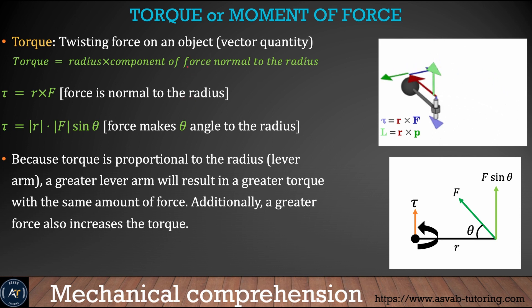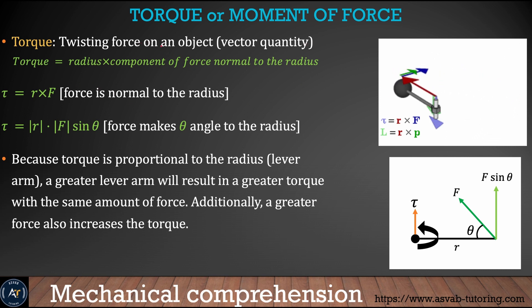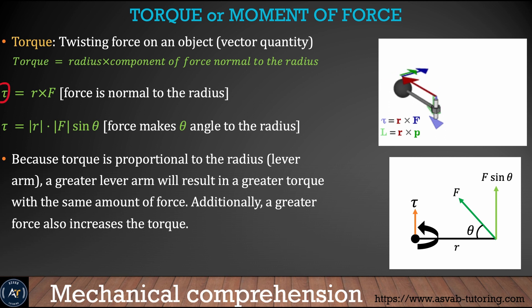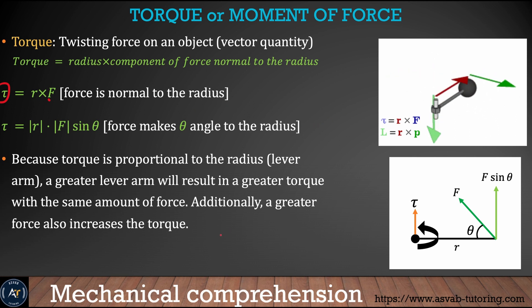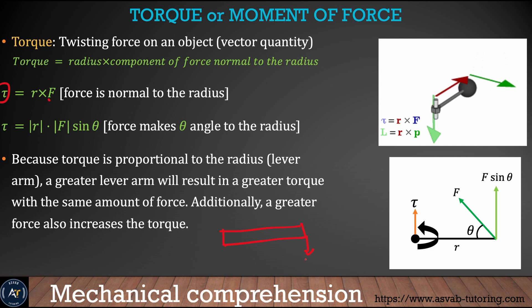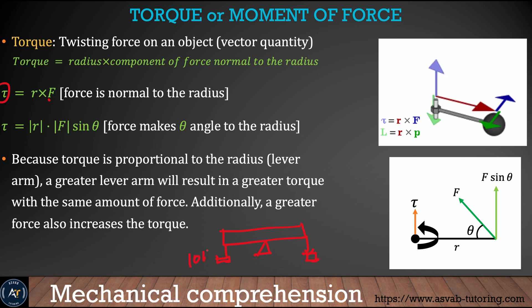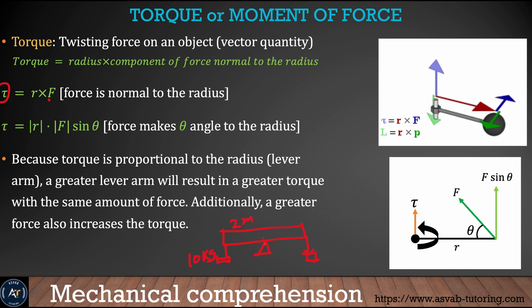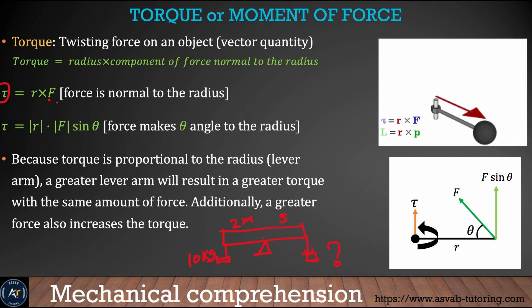The next thing we'll learn is torque, or moment of forces. Torque is the twisting of an object, denoted as tau, which equals force times the normal distance. Say you have an object hanging and you want to make it in equilibrium: if you have 10 kilograms at two meters from the equilibrium point and the other distance is five meters, you can calculate the unknown load using the torque formula.